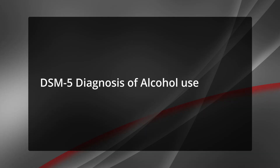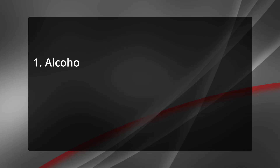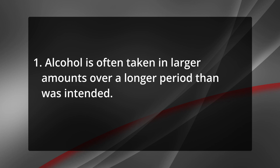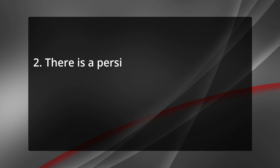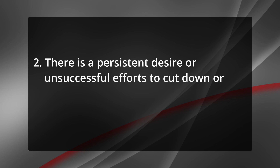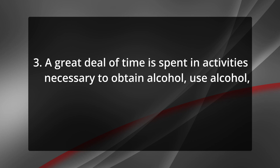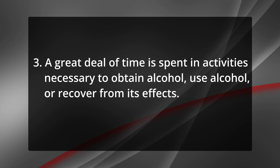Coming to the DSM-5 diagnosis of alcohol use disorder. Alcohol use disorder is a problematic pattern of alcohol use leading to clinically significant impairment or distress, as manifested by at least two of the following occurring within a 12-month period. 1. Alcohol is often taken in large amounts over a longer period than was intended. 2. There is a persistent desire or unsuccessful efforts to cut down or control alcohol use. 3. A great deal of time is spent in activities necessary to obtain alcohol, use alcohol, or recover from its effects.